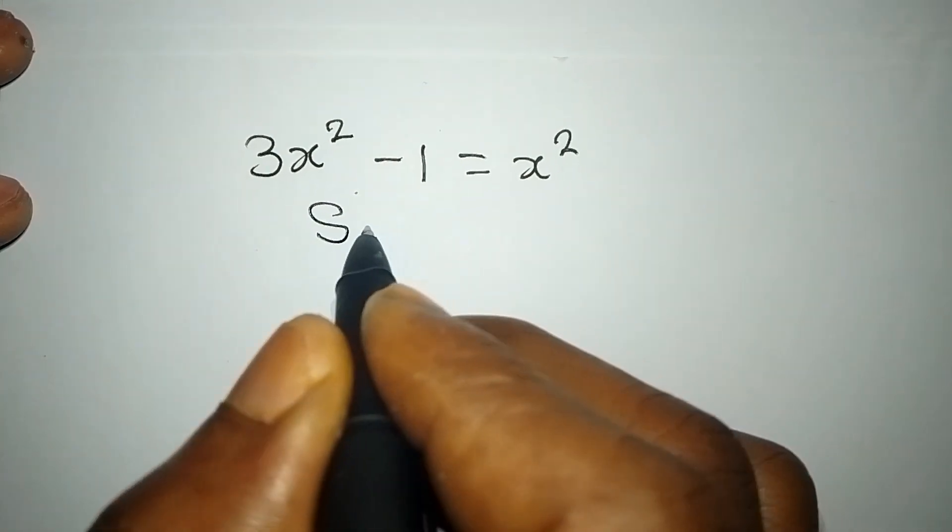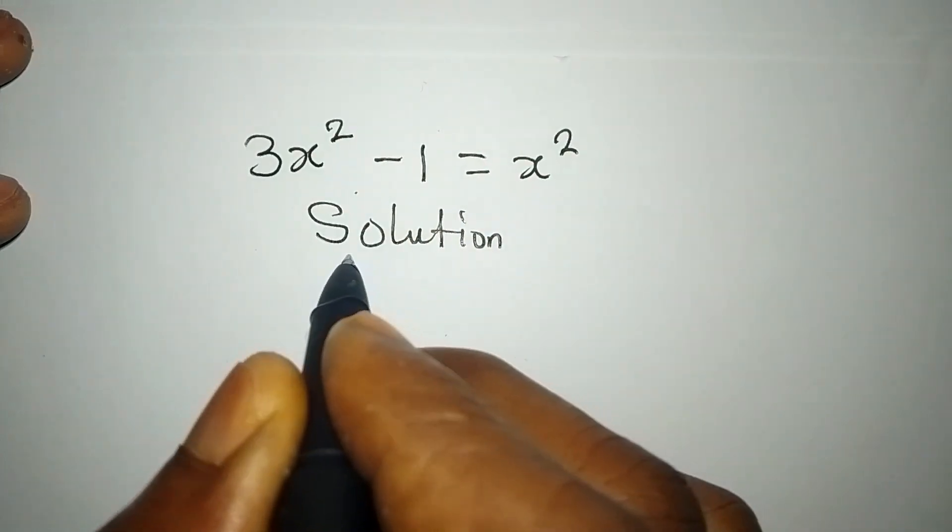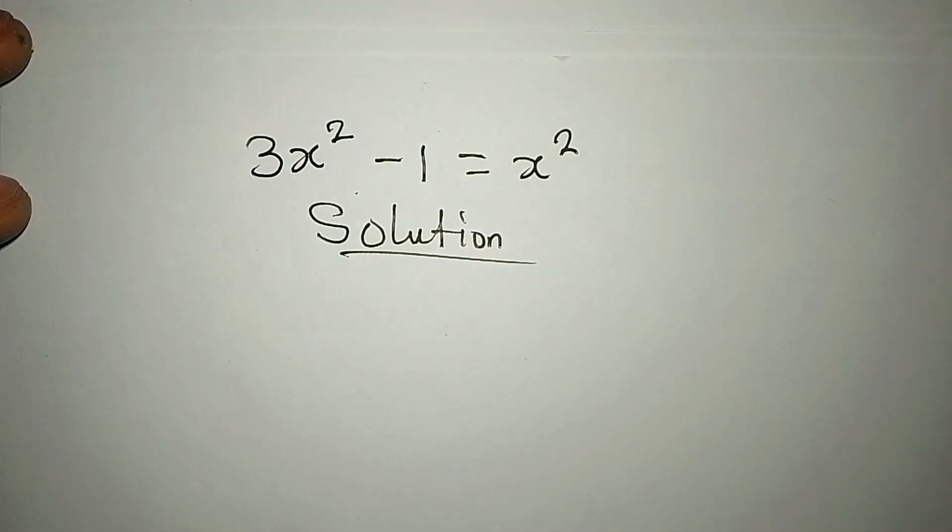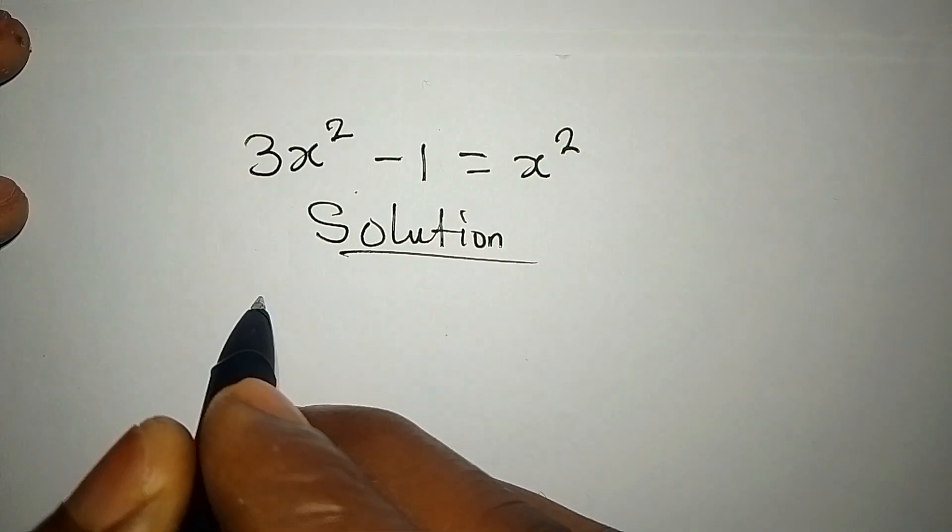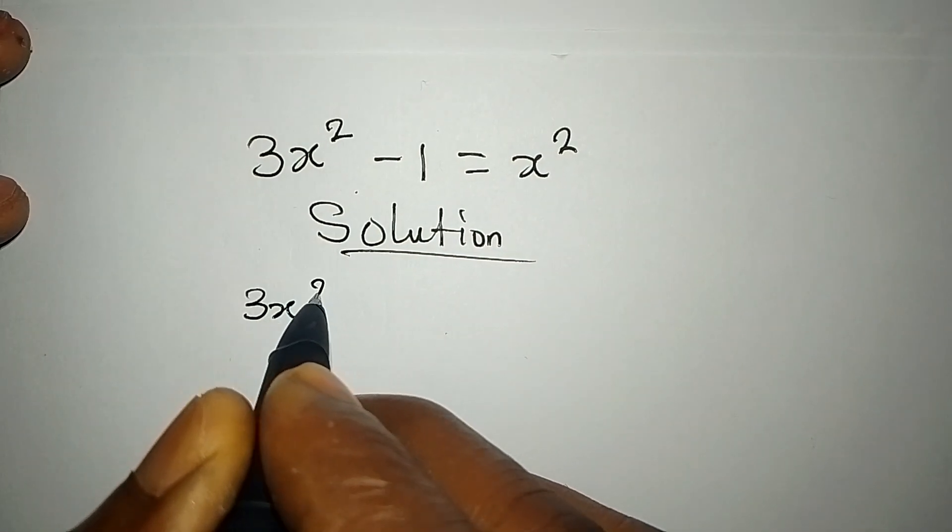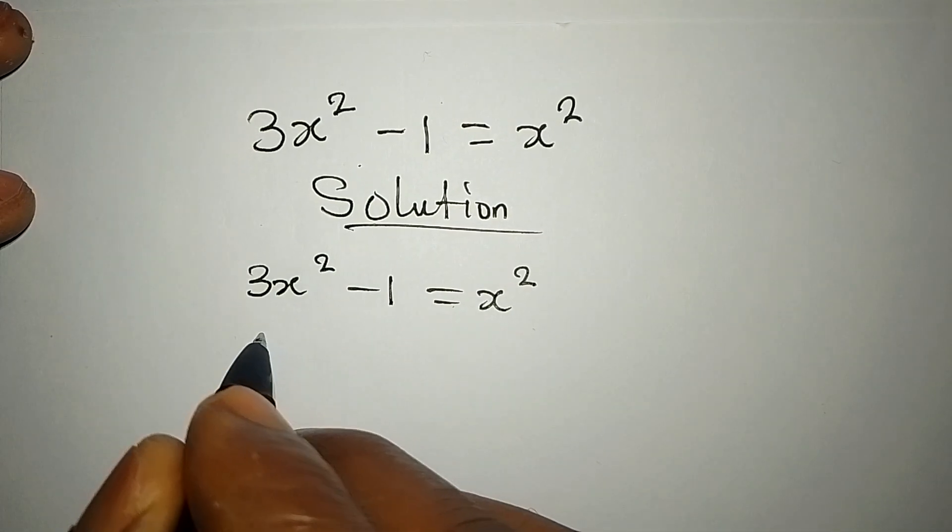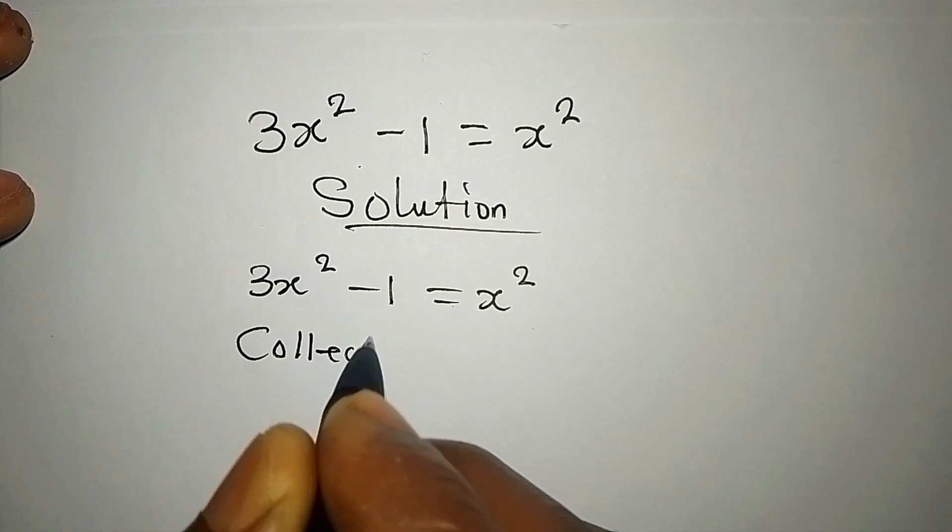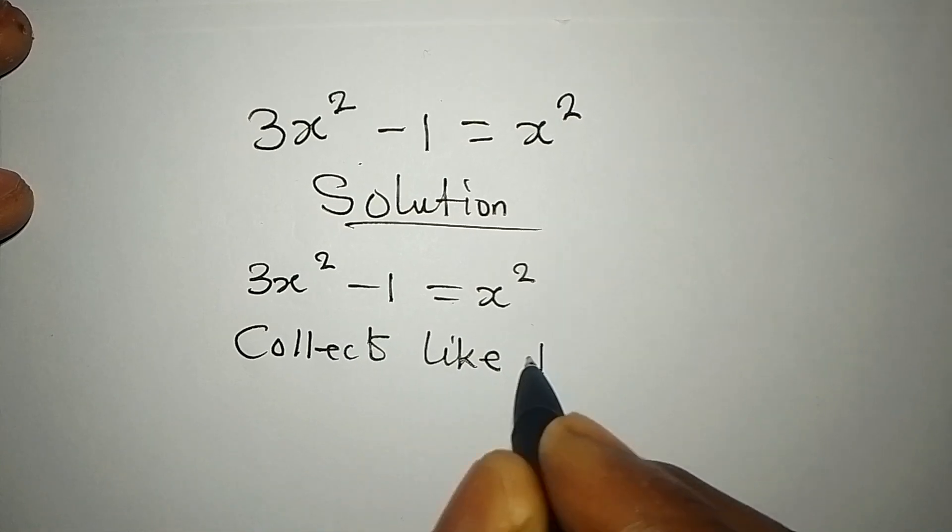Hello everyone, let's find the value of x in this problem. I'm thinking if this is going to give us a real solution. 3x² - 1 = x². From here we can collect like terms together.